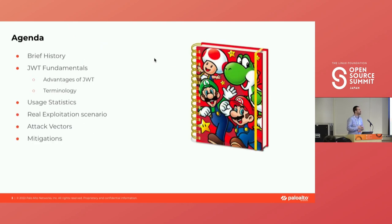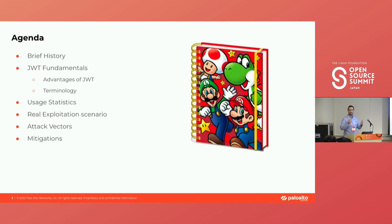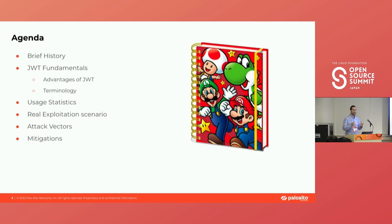Today we have a very special agenda. We're going to start with a brief history of how we used to do authentication and authorization, then move forward to JWT or 'JOT' fundamentals — the advantages and terminology, because at first it looks very confusing with a lot of similar terms. Then we'll look at some statistics, move on to a real exploitation scenario, see more attack vectors, and of course how we can protect and mitigate those attacks.